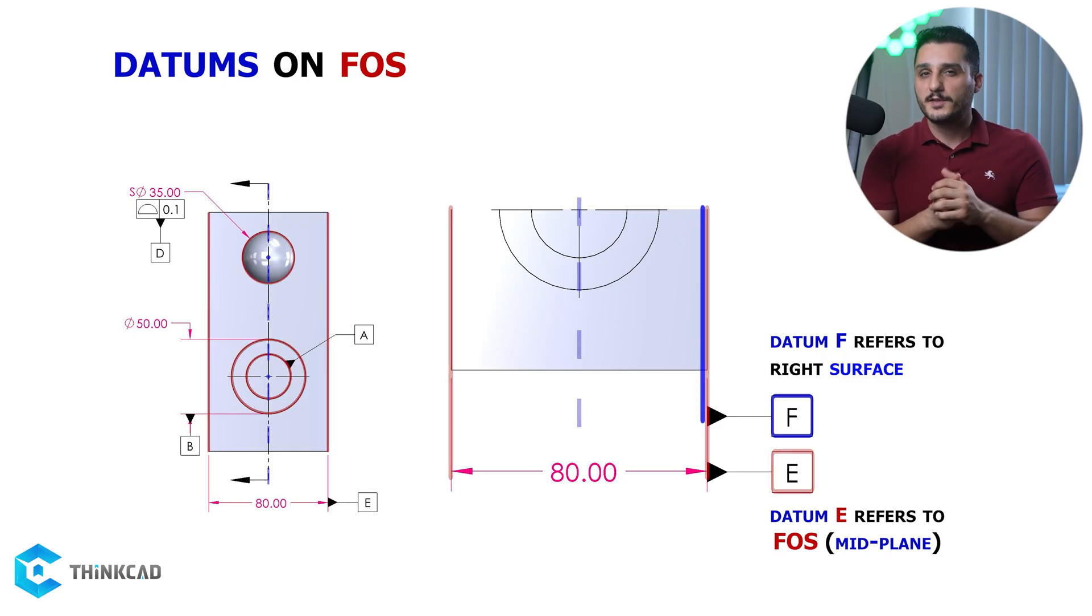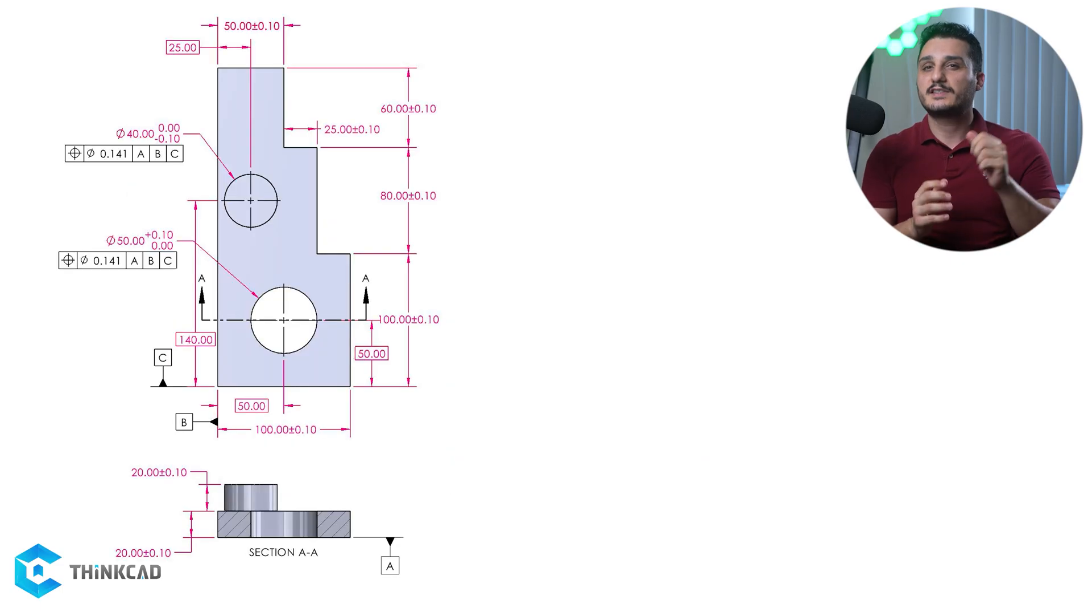Now that you're a bit familiar with what datums are and how you can specify them on your drawing, let's go back to our same example and understand what we're doing when we use datums in our feature control frame.